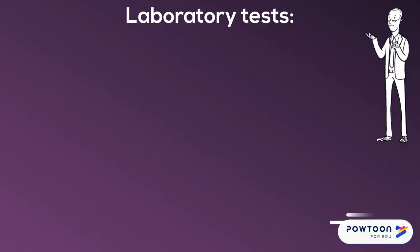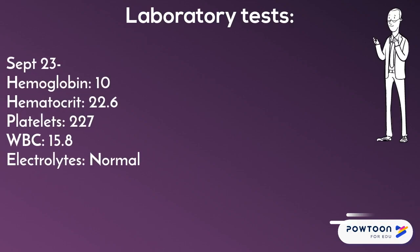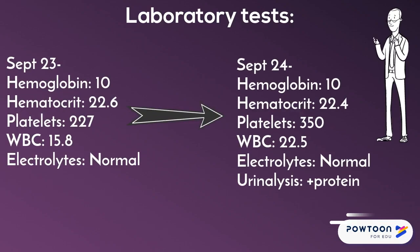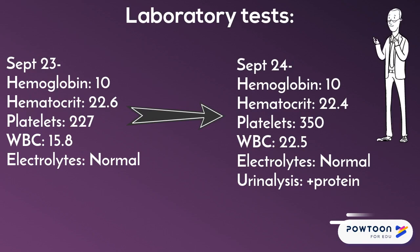The biggest changes seen in the patient's laboratory values were her platelet count and white blood cell count. The platelets increased from 227 to 350, and her white blood cell count went from 15.8 on her day of admission to 22.5. The patient's hemoglobin, hematocrit, and electrolytes remained within normal limits.